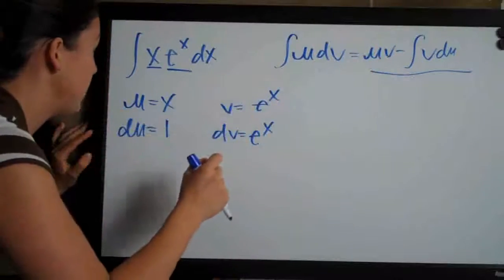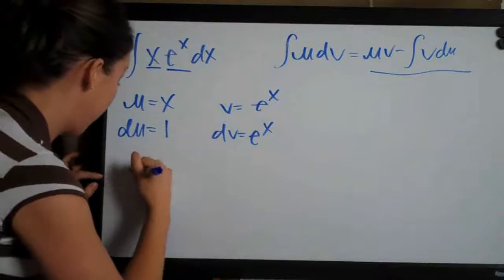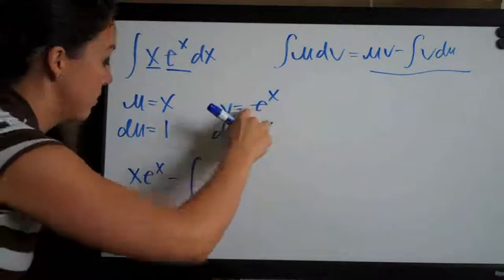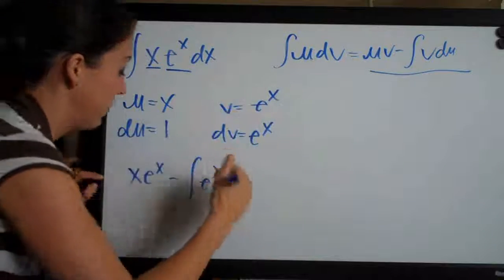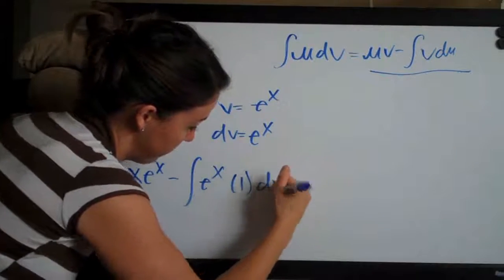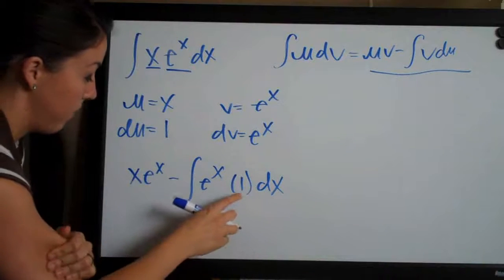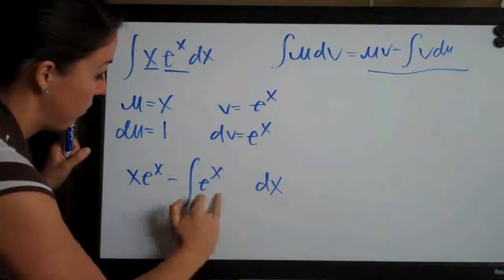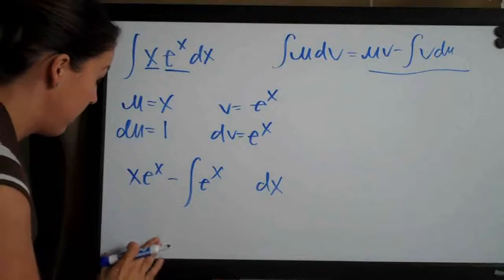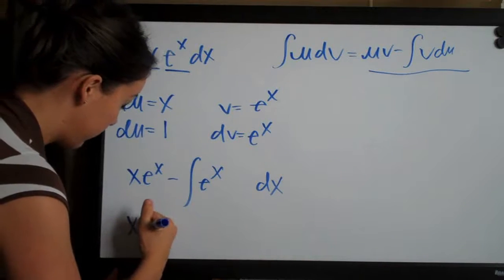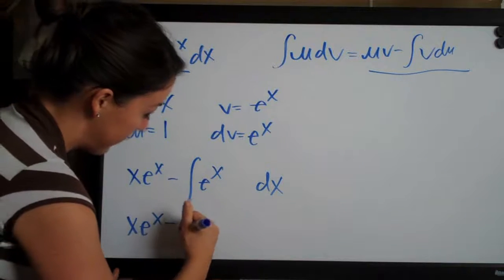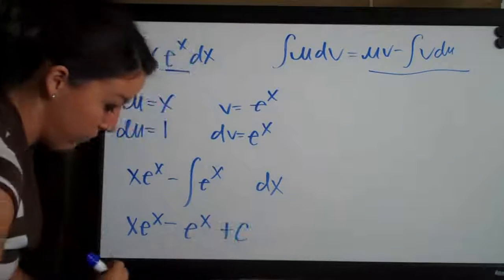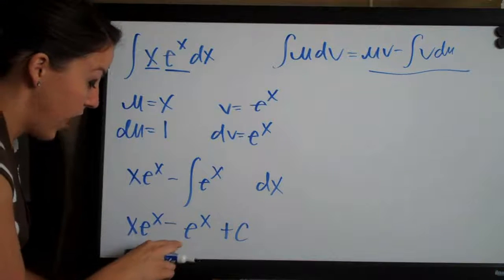So we have u times v — x times e to the x — minus the integral of v, which is e to the x, times du, which is one, dx. The times one is redundant, so it goes away, and we're just left with the integral of e to the x, which is e to the x. So our result is x times e to the x minus e to the x, and then we add C to account for the constant. This is our final answer.